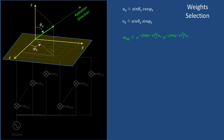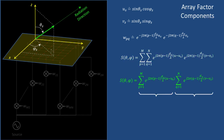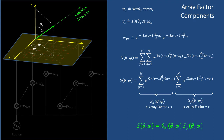Suppose we want to steer the array radiation in the direction represented by angles theta-s and phi-s. We define two auxiliary variables u-s and v-s related to these steering angles. Using these intermediate variables, we select the weight to be applied at each radiating element. When these specific weights are applied, a new expression of the array factor S is obtained. Inside the double summation, we notice a factor depending only on p and another on q. Extracting the p-dependent factor, the double summation becomes a product of two single-index summations: array-factor-x (Sx) and array-factor-y (Sy).